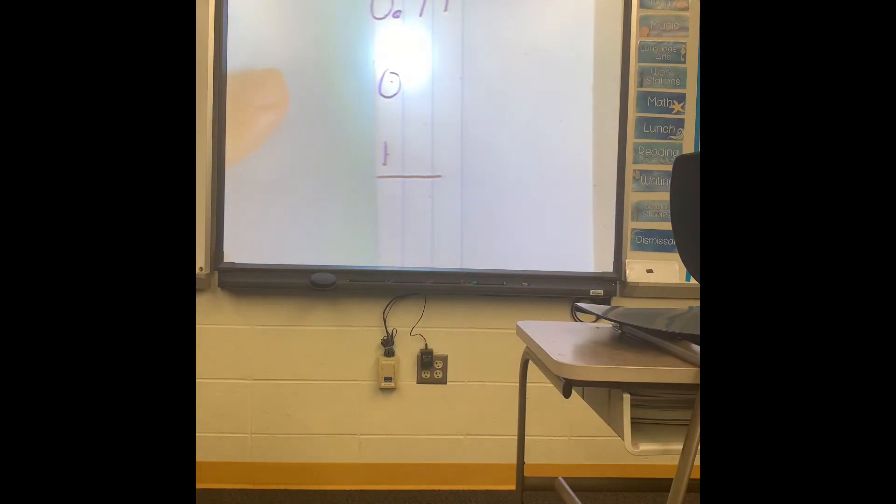I still can't do 0 minus 1. But now that he's a 10, I can borrow and now I make him a 10. So 10 minus 1 is 9, 9 minus 7 is 2, 5 minus 0 is 5. And then put your decimal.